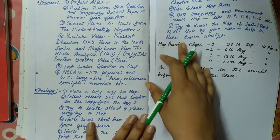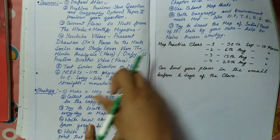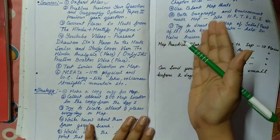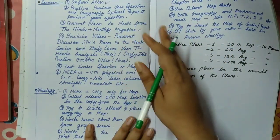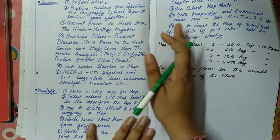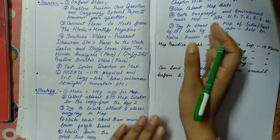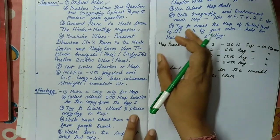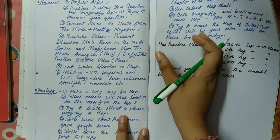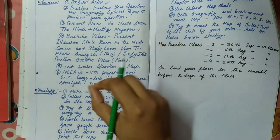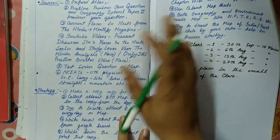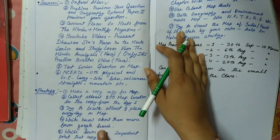Strategy number two: try to locate at least five places every day on the map. I highly recommend this approach. If you think you'll practice maps right before the prelims or optional paper, don't do that — it won't give fruitful results. Instead, locate five places daily. When you read The Hindu or static portions of GS, collect five places and write them in your map copy, then locate them on the map at the end of the day.